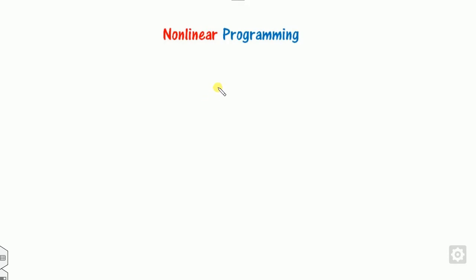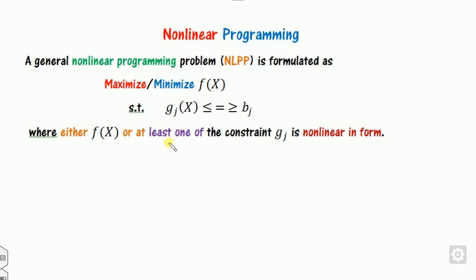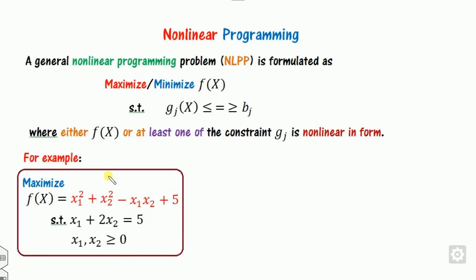First of all, let us discuss what is a non-linear programming problem. A general non-linear programming problem is defined using equation number one, in which f of x is called the objective function and g is called the constraint. If either f of x or at least one of the constraints is non-linear, we call it a non-linear programming problem; otherwise it is a linear programming problem.